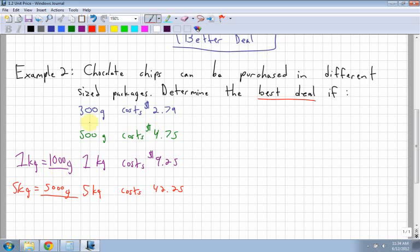So here I have everything in terms of grams, but notice that I have 300, 500, 1,000, and 5,000. Do you know what might be an easy way to do? Is to get everything in terms of 100 grams. Because if I have the cost per 100 grams, then I know which one would be the better deal.